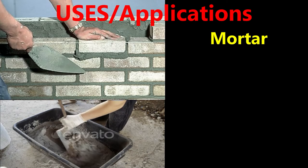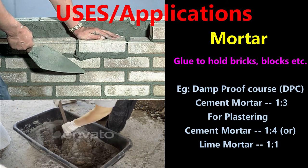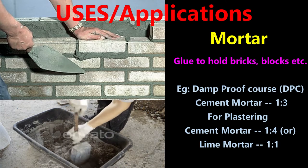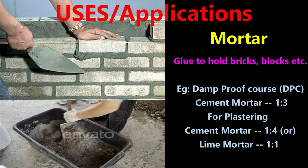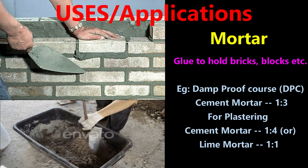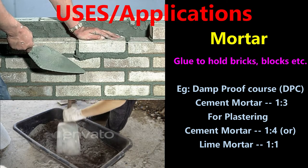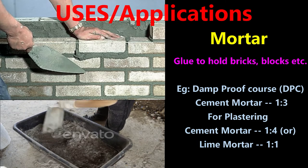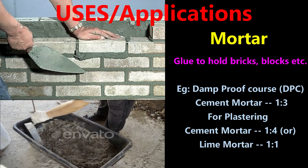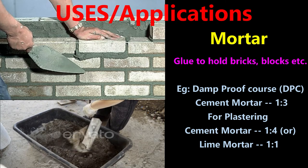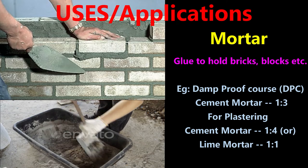Next, uses of mortar. Mortar is commonly used as a glue to hold bricks, blocks, etc., and acts as a bonding material. Depending upon the type of construction, the type of mortar is used. For example, for DPC (damp proof course), cement mortar of ratio 1:3 is used. For plastering works, cement mortar of ratio 1:4 is used, or if using lime mortar for plastering, a 1:1 ratio is used. Various types of mortar are available for specific applications.